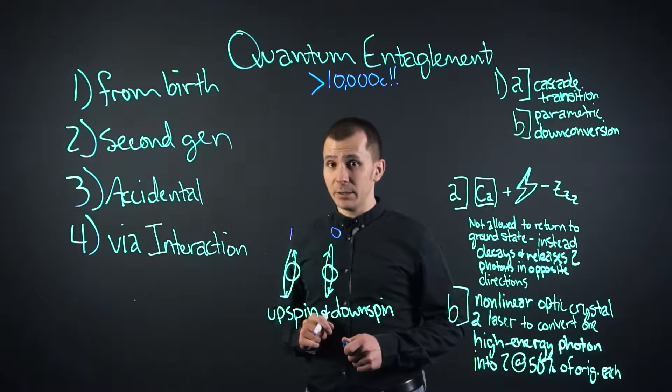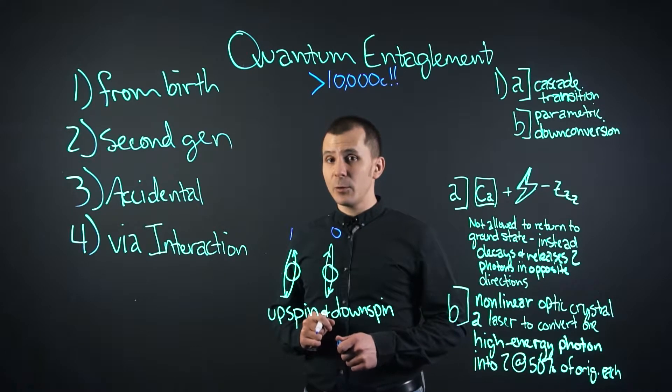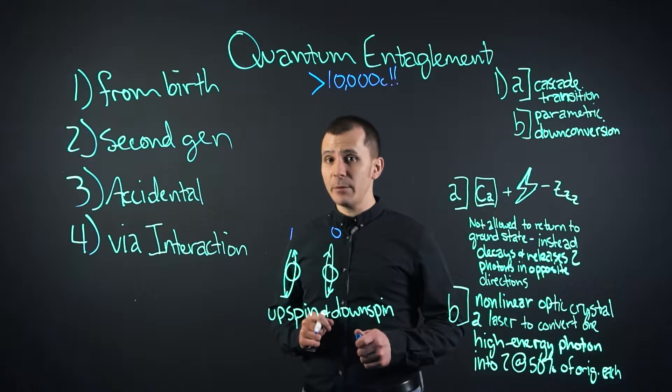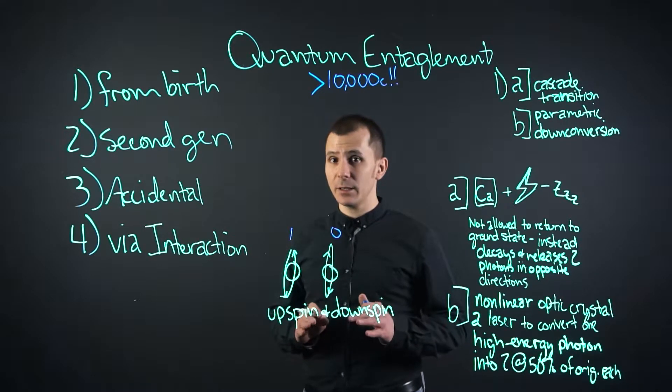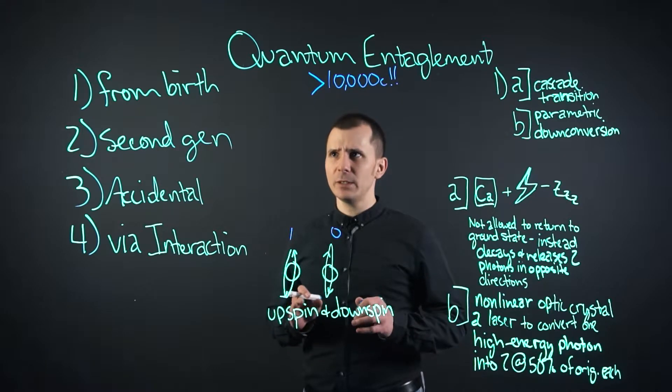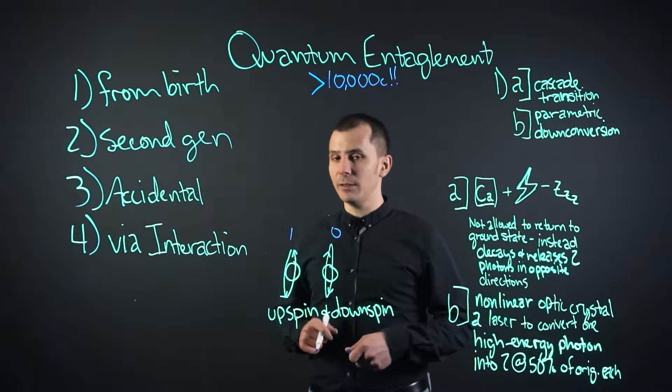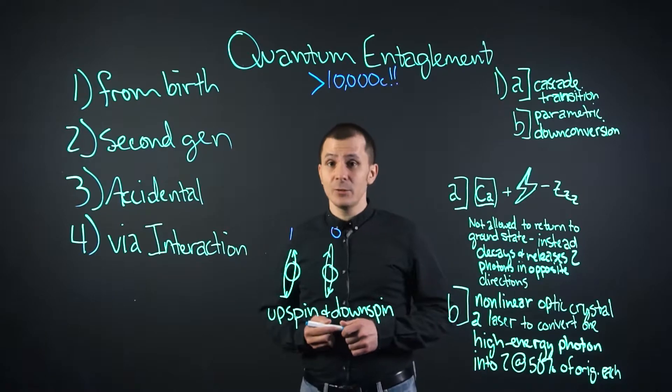Recently, there was a group of scientists who transmitted part of an image with an acceptable amount of data loss using the quantum Zeno effect and counterfactual communication. It's really cool. If you get a chance, check it out.